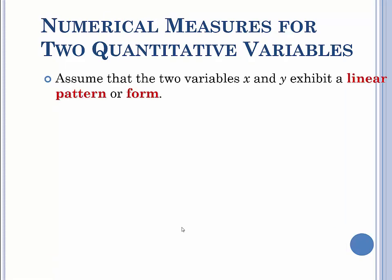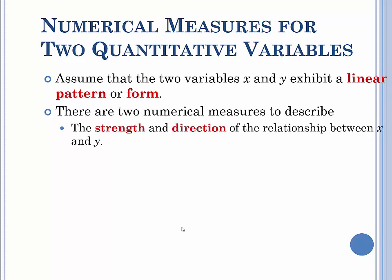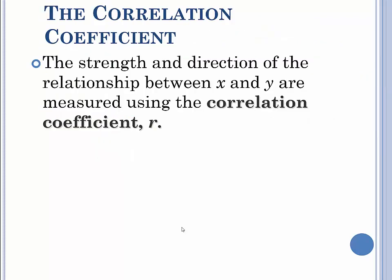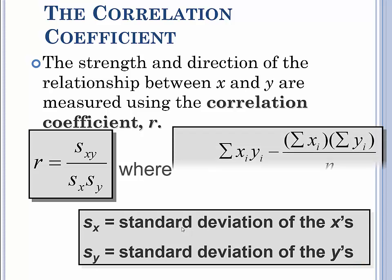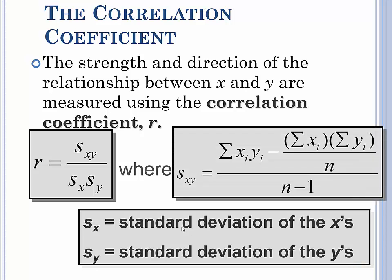Numerical measures. The strength and direction of the relationship are basically the two things we can measure. So you've got the correlation coefficient r which gives you the strength and the direction. If it's positive, we know it's positive. If it's negative, we know it slopes down. This is basically how you come up with those computations. You don't have to worry about that. Any kind of technology you have does all this for you.